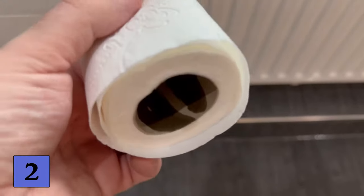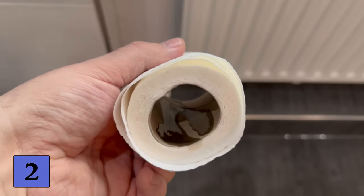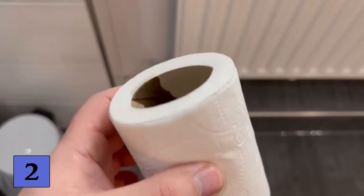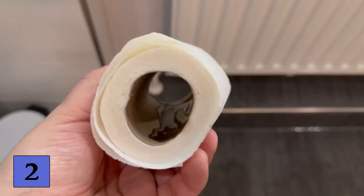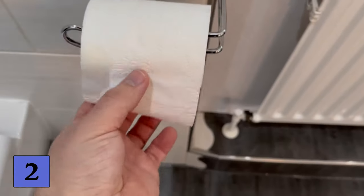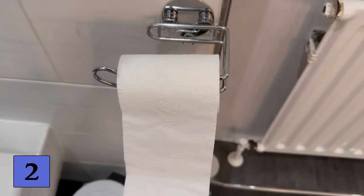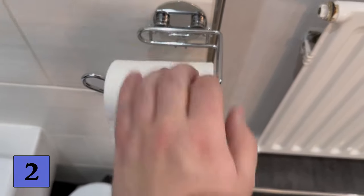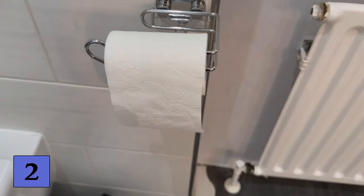I've used a lot but it doesn't really have to be that much. I make sure that it spreads a little bit but that it doesn't necessarily get on the toilet paper. So it should only be in this cardboard roll. Then you can put the toilet roll back on the holder and every time you take a piece of toilet paper, the friction creates a pleasant smell.